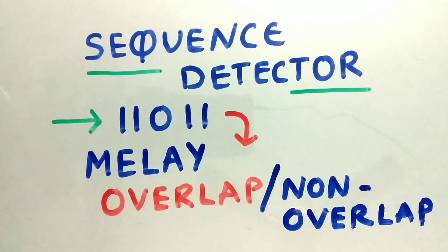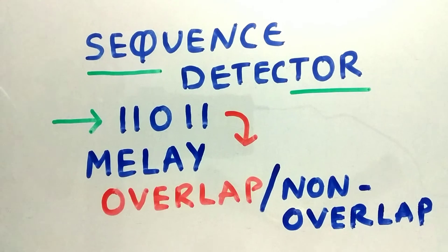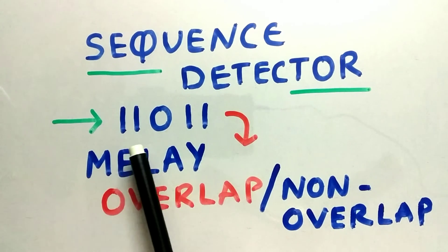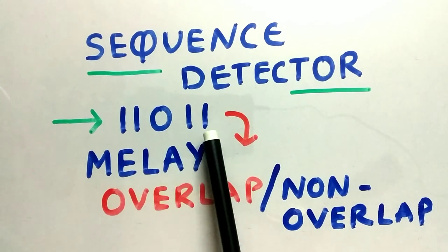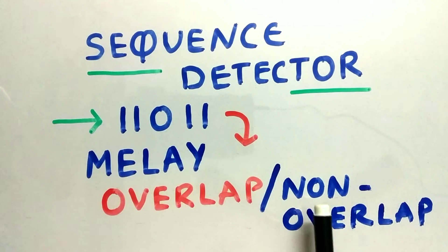Hey guys, welcome back to another interesting topic. Today's topic is on sequence detector for the sequence 11011 using Mealy overlap and non-overlap machine.